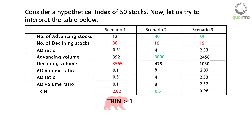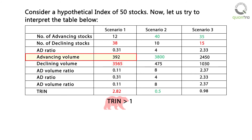When TRIN is above 1, it indicates a bearish sentiment. This happens because the number of declining stocks closing in red are more than those closing in green, which results in an AD ratio of less than 1. Rationally, in a declining index, greater volume is traded in declining stocks than in advancing stocks, and the resulting ratio is far less than 1. As a result, TRIN will be greater than 1.